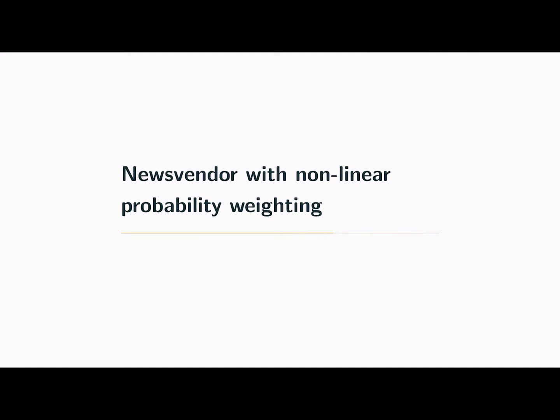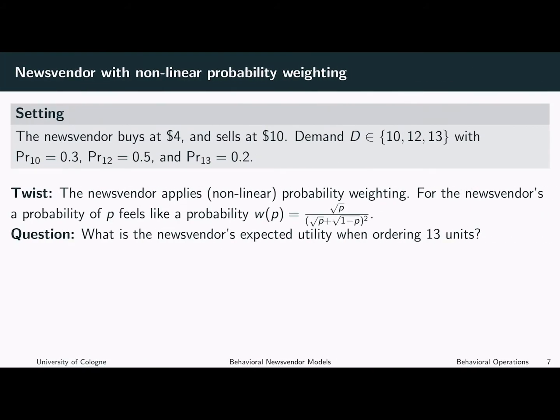Next, we consider a news vendor that applies nonlinear probability weighting. The concept of nonlinear probability weighting is a bit different than the behavioral concepts we applied before. The difference here is that a news vendor who applies nonlinear probability weighting in some sense still tries to maximize the expected profit, but her expectations are not based on the real or objective probabilities, but on subjective probabilities.